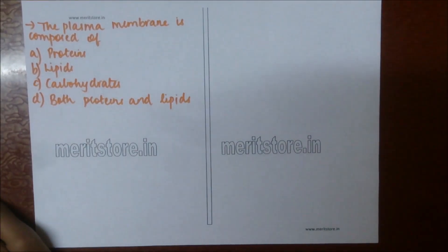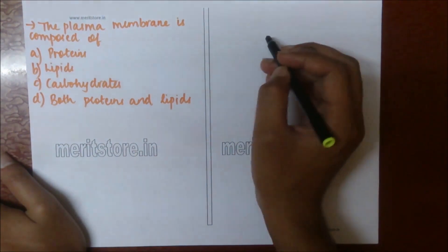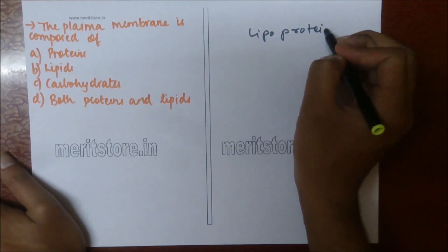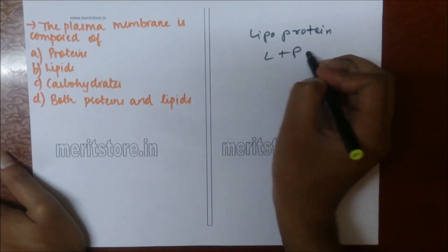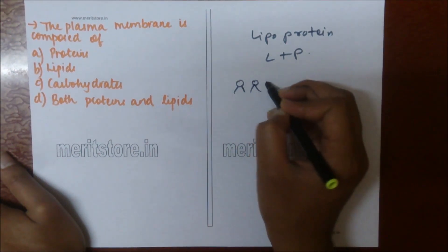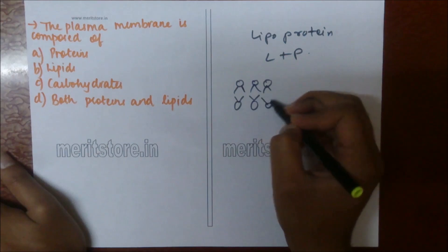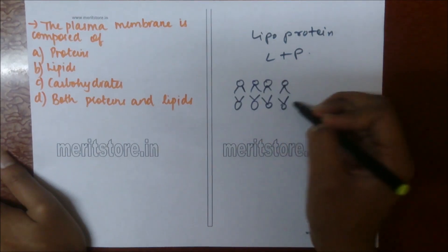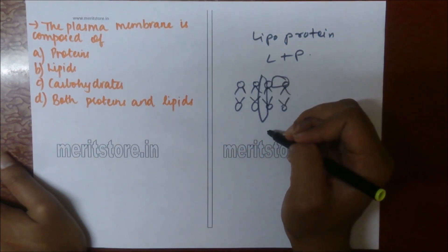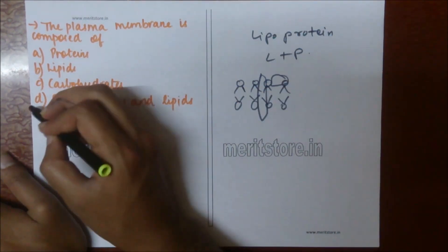Plasma membrane is composed of: A) protein, B) lipids, C) carbohydrate, D) both protein and lipids. Plasma membrane is a structure consisting of lipoproteins — it is a fluid mosaic model. The lipid has a lipophilic head and a hydrophobic tail present inside. There are also many types of surface proteins and integral proteins, with some surface proteins known as receptors. So the plasma membrane consists of both lipids and proteins.